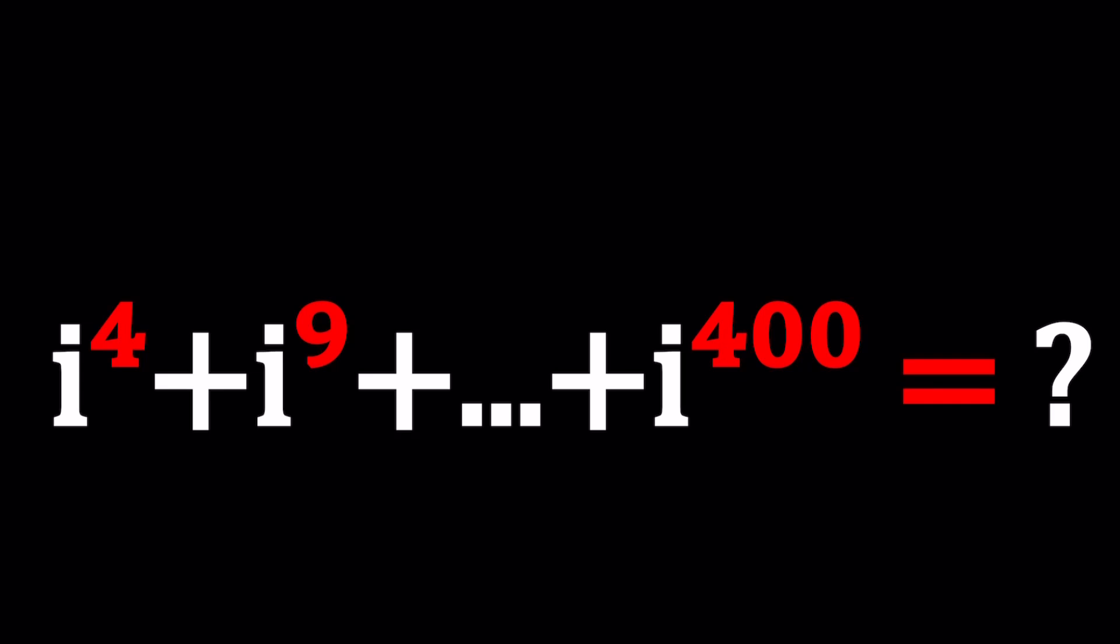So we have i to the fourth power plus i to the ninth power plus i to the 16th power all the way up to 400 where all the powers of i are perfect squares starting with 2 squared and then 3 squared and then 4 squared all the way up to 20 squared.